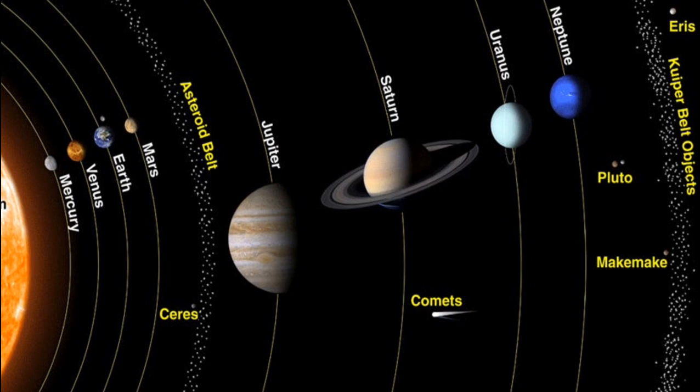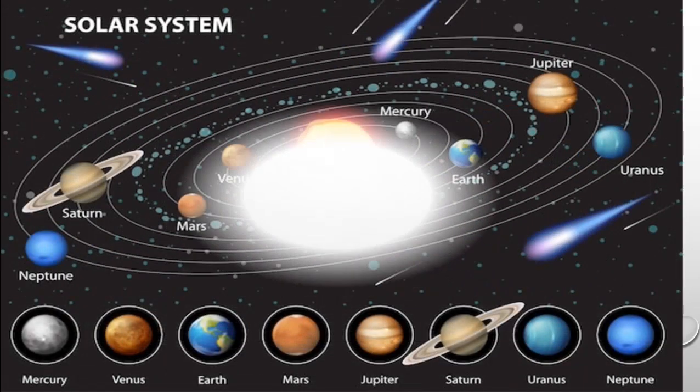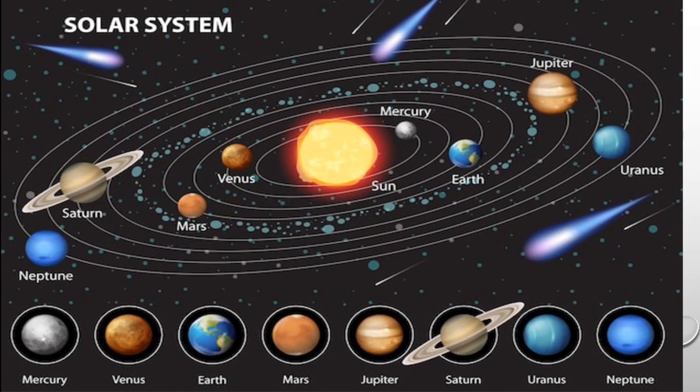This is the solar system — you can see the Sun, then Mercury, Venus, Earth, Mars, then Jupiter, Saturn, Uranus, Neptune, and then this small planet which is called Pluto. You can also see in this picture the orbits of every planet. Every planet revolves around its own orbit.